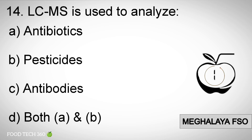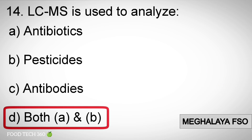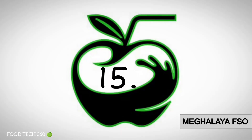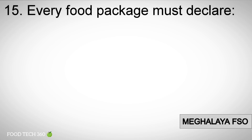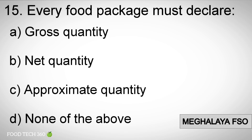Correct answer: D) both antibiotics and pesticides. Question number 15: Every food package must declare — options: A) gross quantity, B) net quantity, C) approximate quantity, D) none of the above.